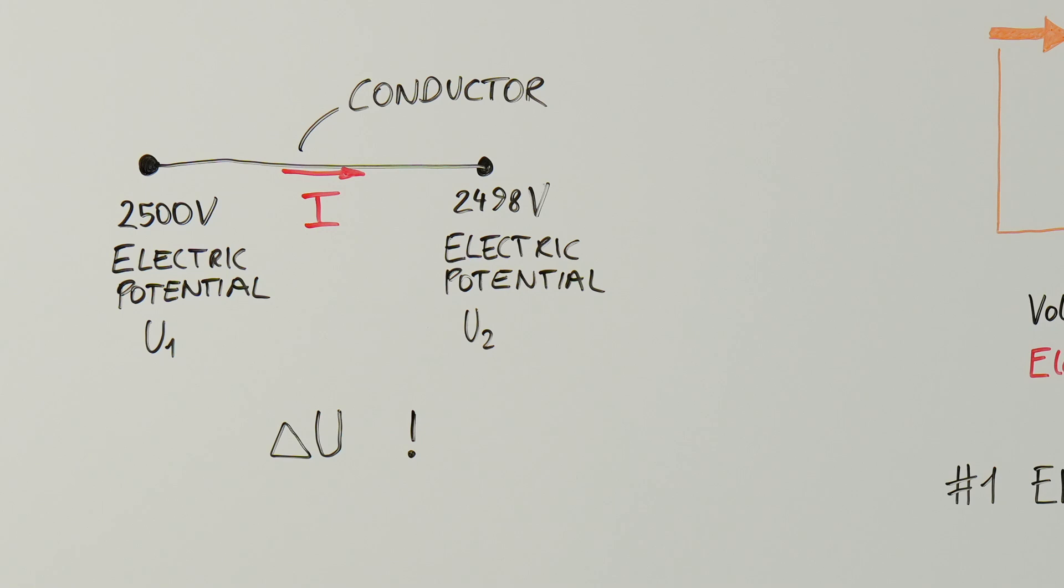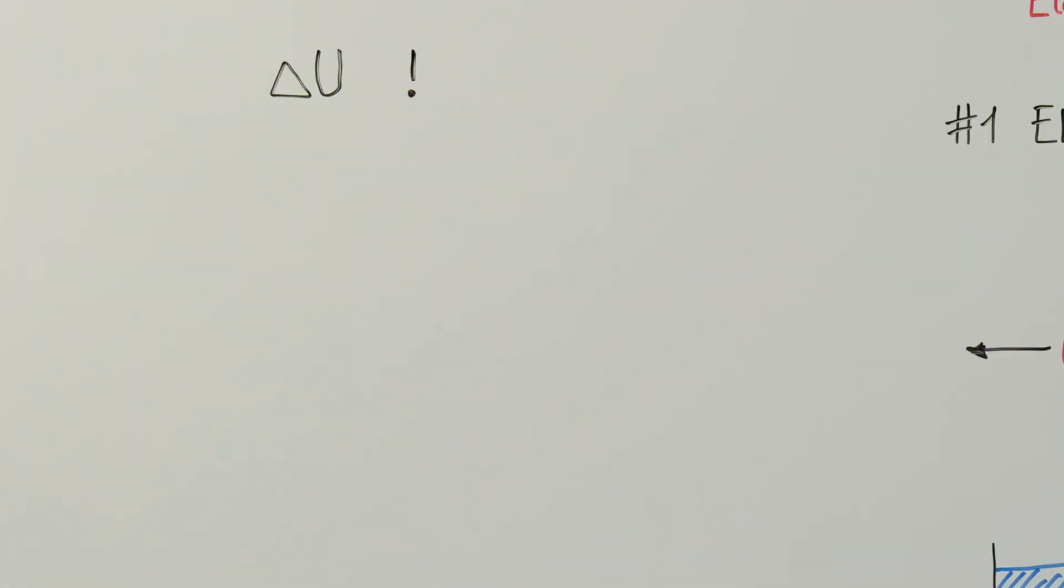This difference in electric potential is the voltage, which is always a relative measurement. If we say we have a triple A battery with a voltage of 1.5 volts, we mean that the electric potential difference between the plus and minus pole is equivalent to 1.5 volts.